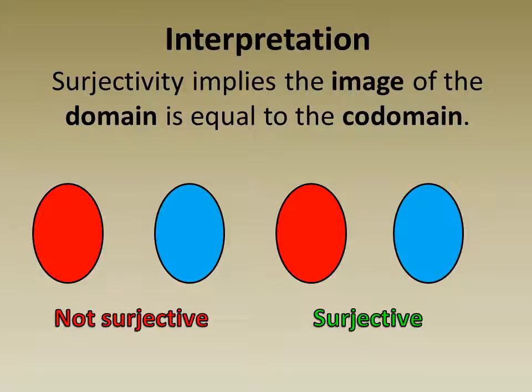A visual interpretation is that the image of the domain is equal to the codomain. On the right we see a surjective function and on the left we see a function that is not a surjection.